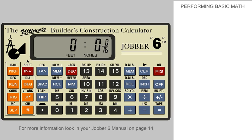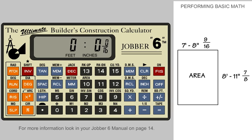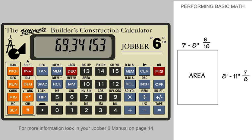If you want to multiply or divide a dimension made up of feet, inches, and fractions by another dimension with feet, inches, and/or fractions, the calculator will automatically convert the answer to a decimal dimension because it will be an area answer. For example, multiply 7 feet, 8 and 9 sixteenths inches by 8 feet, 11 and 7 eighths inches.